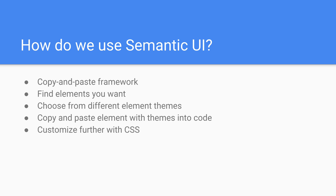How do we use Semantic UI? Since it's a copy-and-paste framework, we essentially search through the website until we find the elements we want. We can then choose from a variety of different element themes. The documentation is very clear and provides a bunch of different options for each of the widgets and elements. We can then copy and paste the element with the themes we want into our code and customize it a bit further with CSS. We'll launch right into exploring the website, as a lot of this is going to be copy and paste and examining the elements we want, so it's crucial to know how to use the website properly.